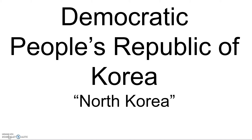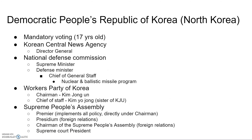Now we have the Democratic People's Republic of Korea, also known as North Korea. North Korea has a mandatory voting age of 17 and a roughly 99.97% voting turnout — voting overwhelmingly, essentially 100%, for the current administration. The Korean Central News Agency, while not part of the formal governmental structure, plays an important role — its director general controls the media and state-sponsored media helps propel the party.